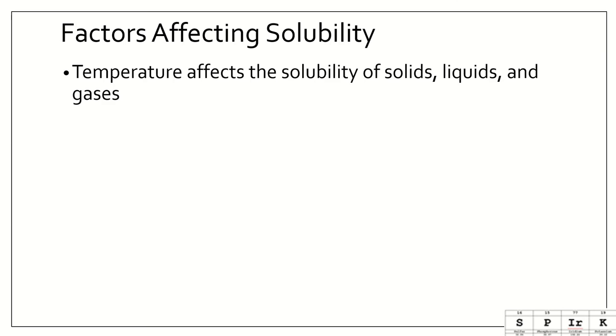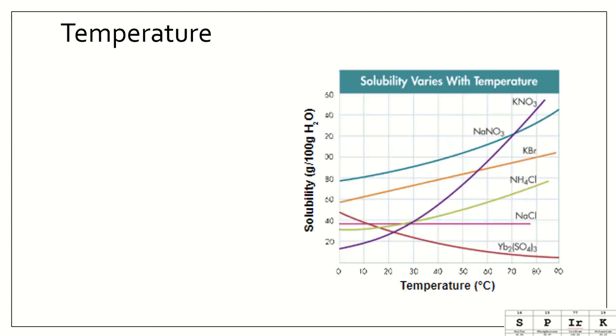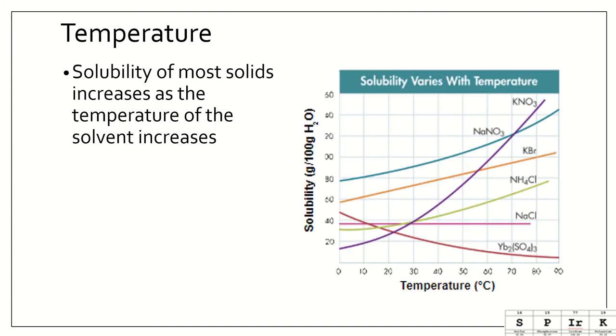So temperature affects the solubility of solids, liquids, and gases, while pressure only affects the solubility of gases. And think about carbonation or the bubbles that are in a bottle of pop. So solubility of most solids increases as the temperature of the solvent increases. And that should make sense. Think about iced tea compared to hot tea. You're going to get a lot more sugar in the hot tea than you will in the cold tea. And this is an experiment that you could try at home.